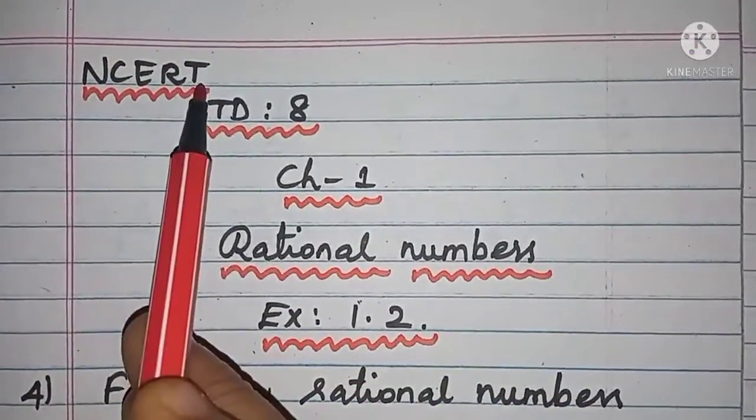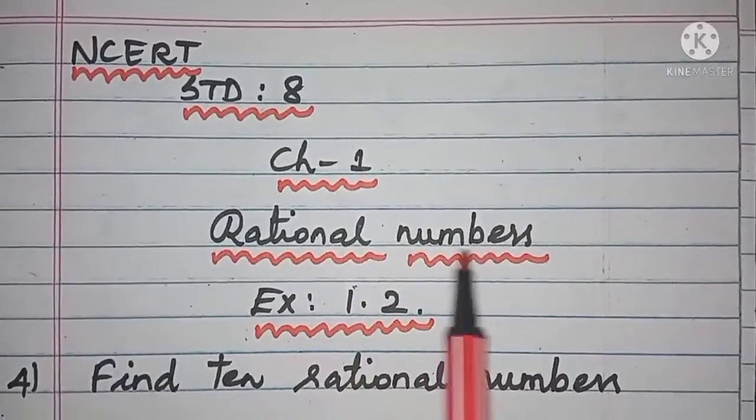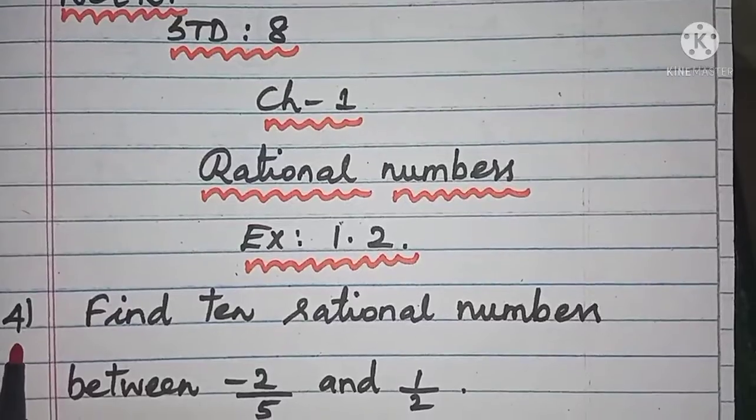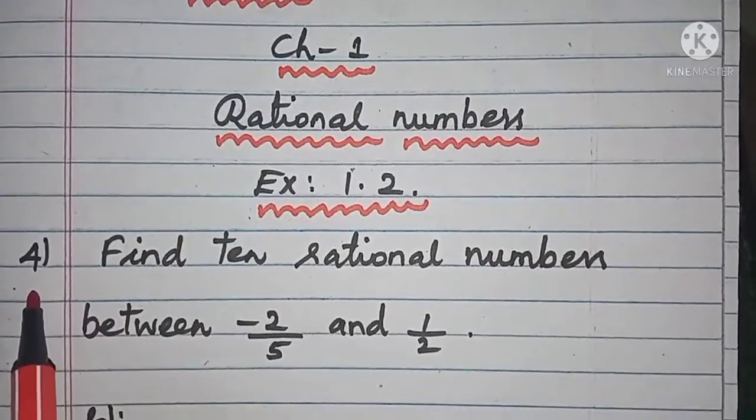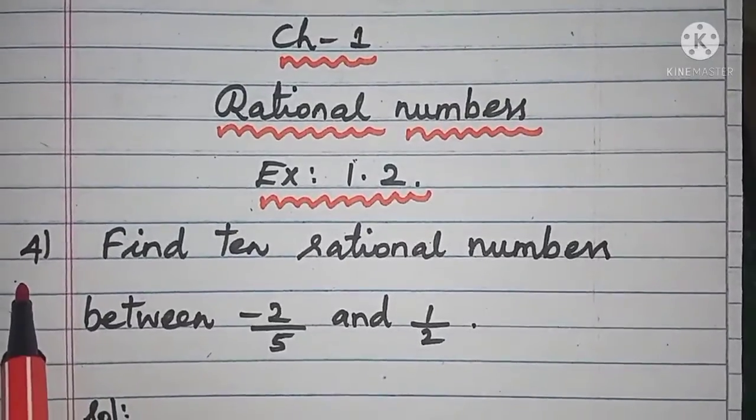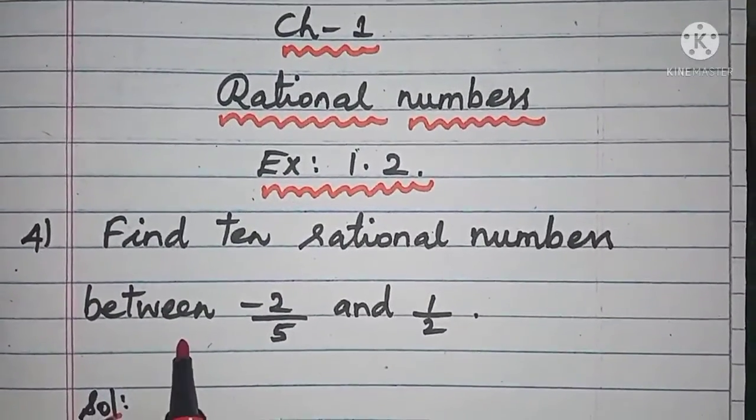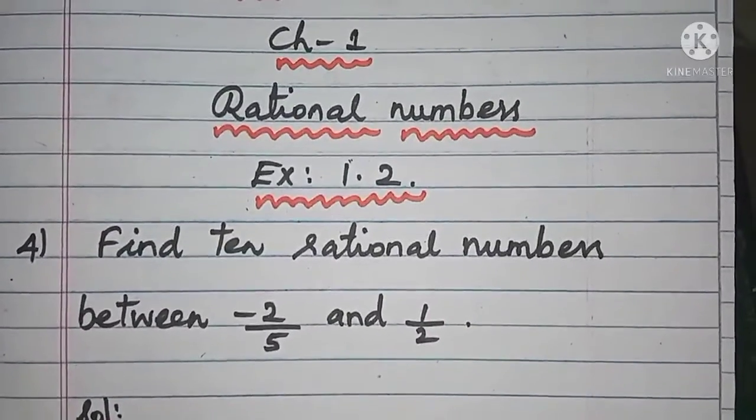For standard 8, chapter 1 rational numbers, exercise 1.2, question number 4. The third question's link is in the description box. Now the fourth question is: find 10 rational numbers between -2/5 and 1/2. It's a very important question you can expect in your examination.